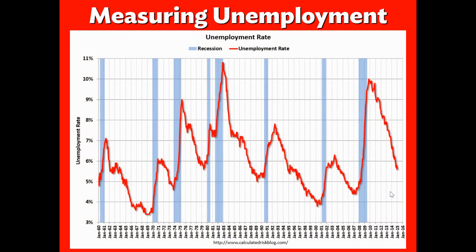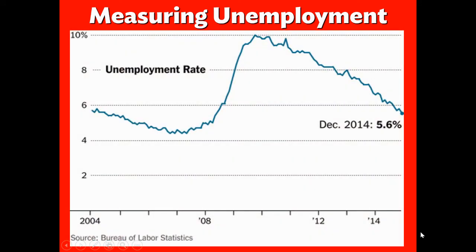Measuring unemployment over time: this chart highlights recessions experienced over the last 20 to 30 years. The grayed-out areas are periods of recession — notice how unemployment spikes as people are let go quickly to curb costs. In the Great Recession, unemployment went from around 5% practically to double digits almost overnight. That was surprising and shocking because it hadn't happened since the Great Depression. As I was teaching back in 2008, suddenly the economy tanked and we had a huge spike — and that could happen again.